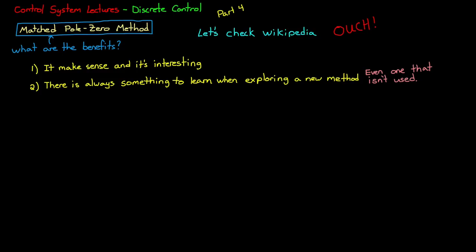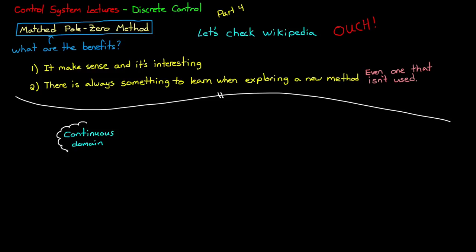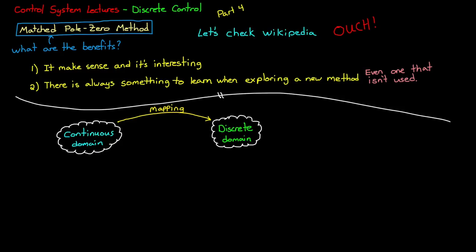Okay, recall that when we're discretizing a continuous system, we're trying to find an appropriate mapping between the continuous s-domain and the discrete z-domain. That is, we're looking for the best way to convert our s-domain transfer function into a z-domain transfer function. And in previous videos, we covered several ways to do this mapping.